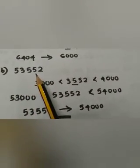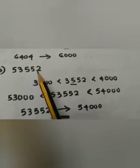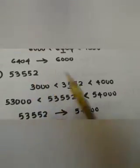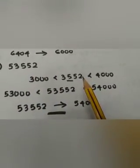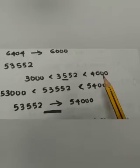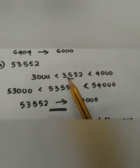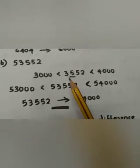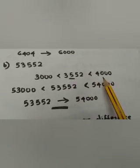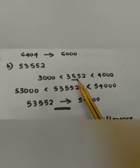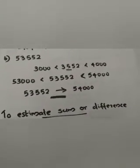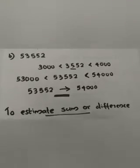One more example: 53,552. We have to round this to nearest thousand. First consider the four digits: 3,552. Find out between which two thousands this lies — between 3,000 and 4,000. We check the digit in the hundreds position: it is 5. So we are rounding up. The upper thousand is 4,000, so 3,552 is rounded to 4,000. Therefore 53,552 can be rounded to 54,000.